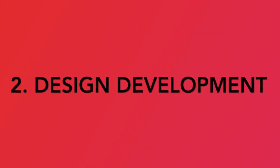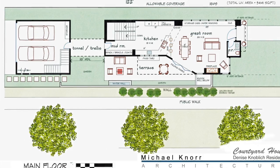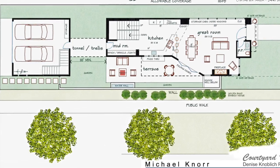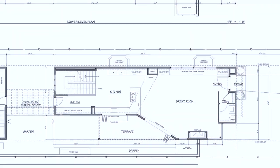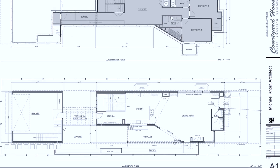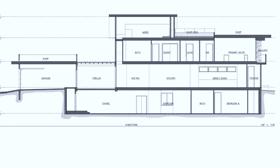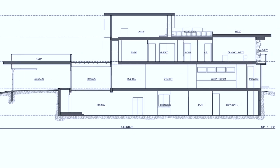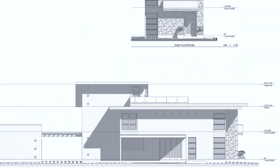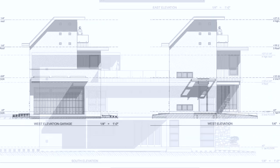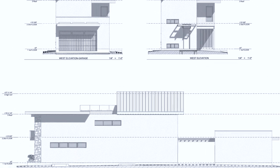The second phase is design development. This phase does exactly what the name says — the design is developed in more detail. Drawings become more technical with decisions made on the structural format, HVAC systems, window manufacturer, and exact material specifications.